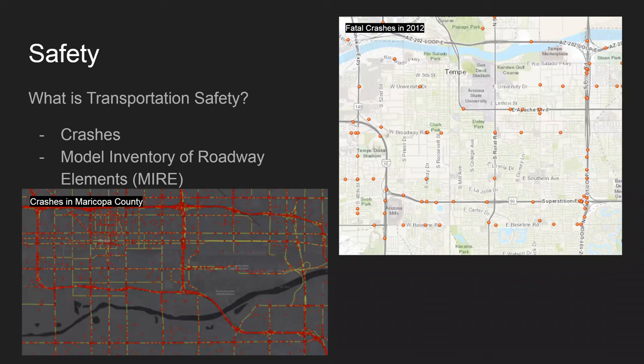One of the things now being asked of us by federal highways is collecting data called the Model Inventory of Roadway Elements, or MIRE. It's a pretty extensive database — I believe there are 206 different data items we're supposed to collect on all public roads, 38 of which are mandatory while the others are optional.